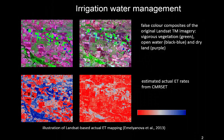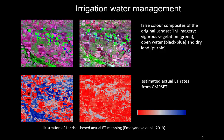One of the really important areas where that is useful is in irrigation water management. At the top of the pictures here you see, for two different times, so-called false color composites. As covered in another video, green shows areas with healthy vigorous crop and blue shows open water. But what we really want to know from an irrigation management perspective is how much evapotranspiration — how much water is being used from those surfaces.